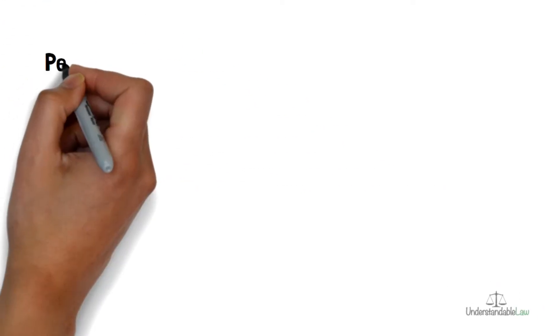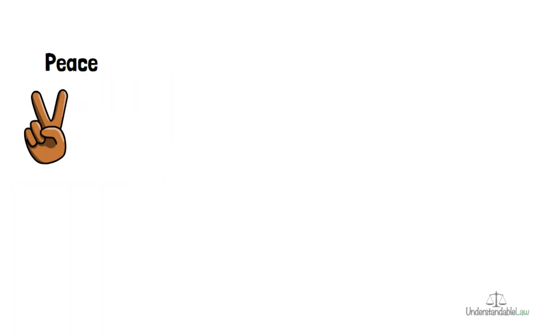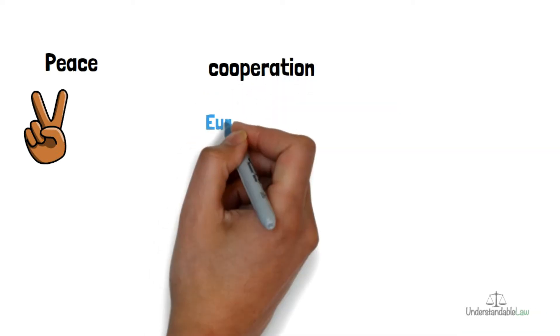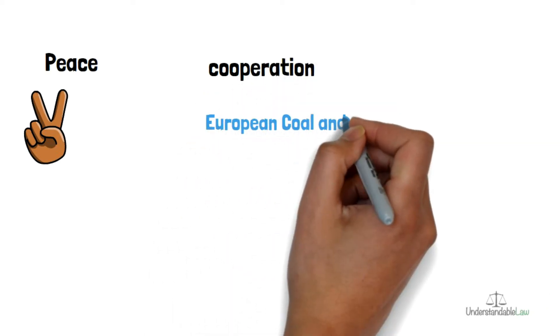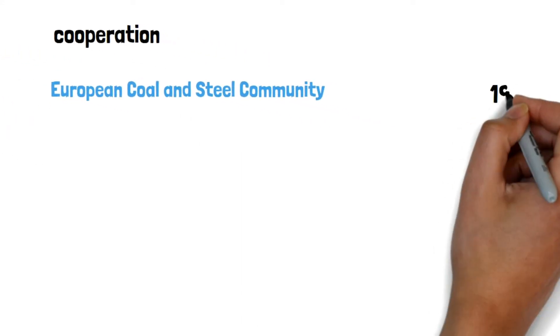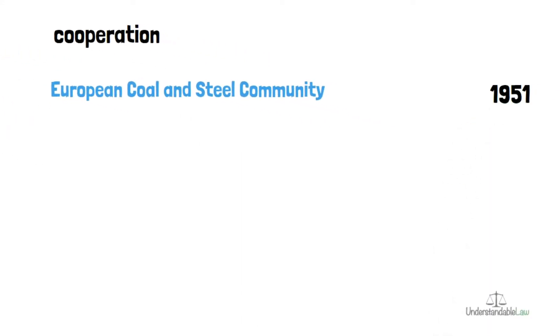In order to preserve peace, the initiative came from France to set up a joint body for the coal and steel markets. This cooperation was decided in a treaty signed in Paris on the 18th of April 1951 by a number of member states. This is called the Treaty of Paris.